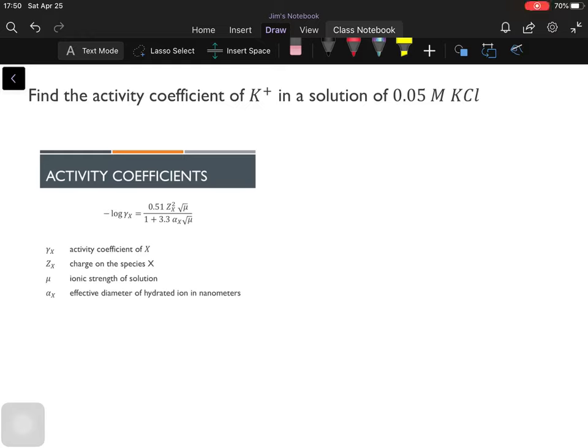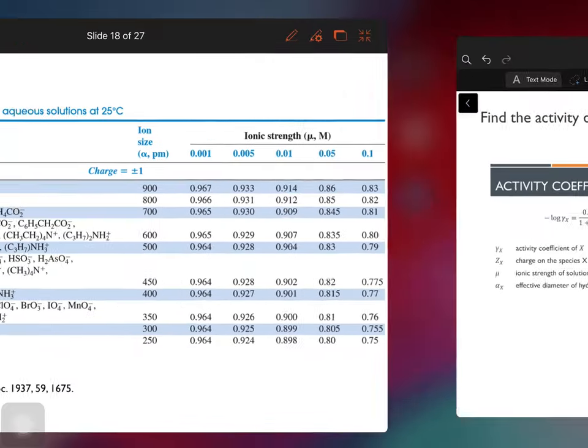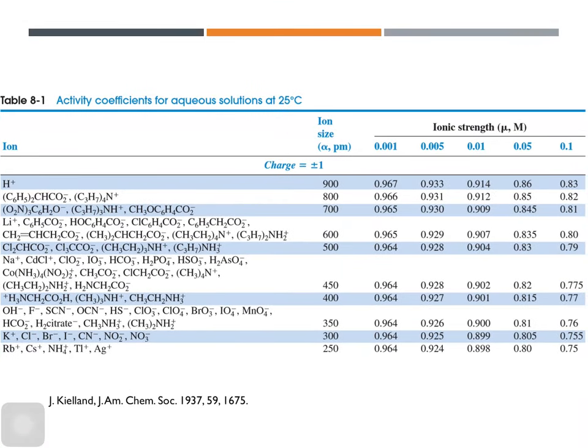Okay, so today we're going to use the Debye-Hückel equation. Previously, we have this table. I presented you this table wherein the activity coefficients are already presented. However, the problem is this.